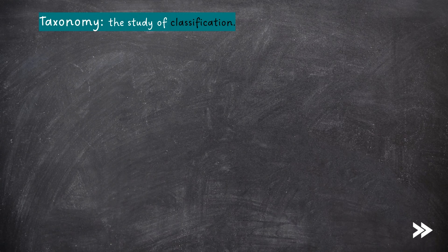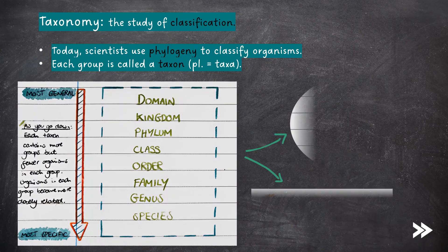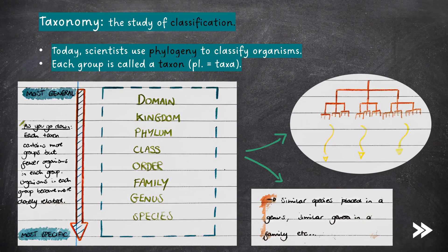Note that taxonomy is the study of classification. Today, scientists use phylogeny to classify organisms. Each group is called a taxon, of which the plural is known as taxa. The biggest group is a domain. Within domains, we have kingdoms. Within kingdoms, there exists phyla. Within phyla, there exist classes. Classes are made up of orders, which consist of families, which are made up of genera — this is the plural of the word genus. And then genera consist of species.